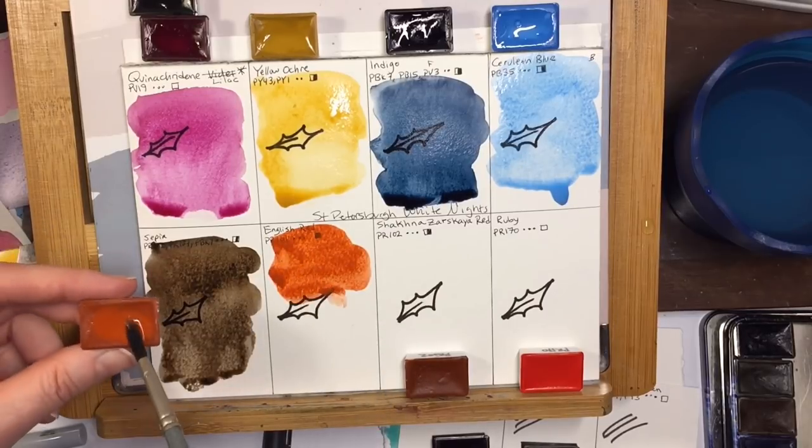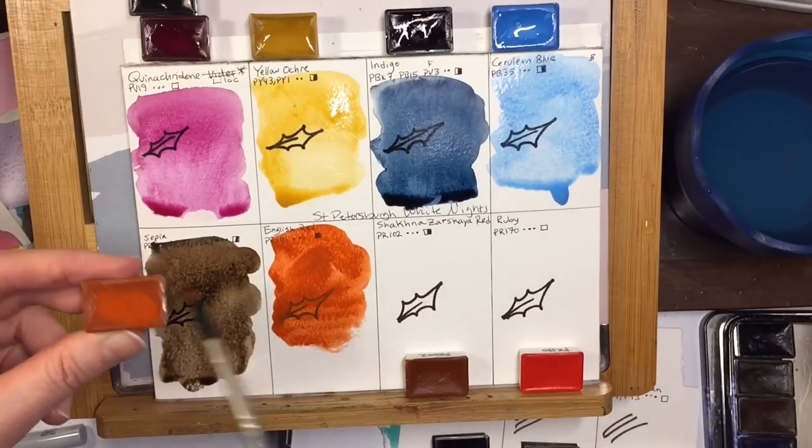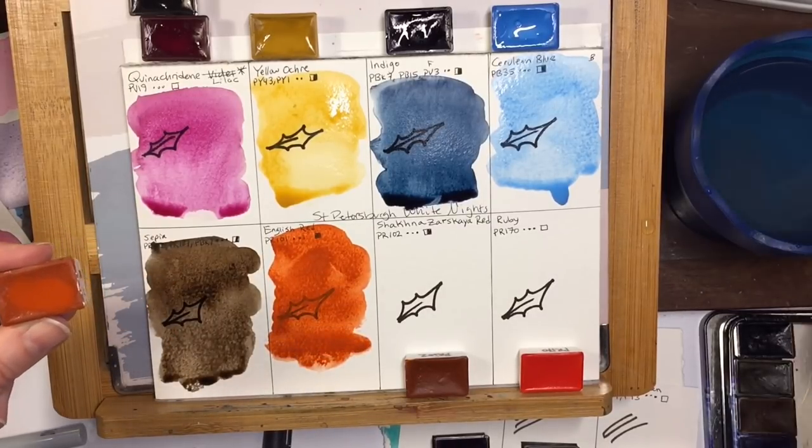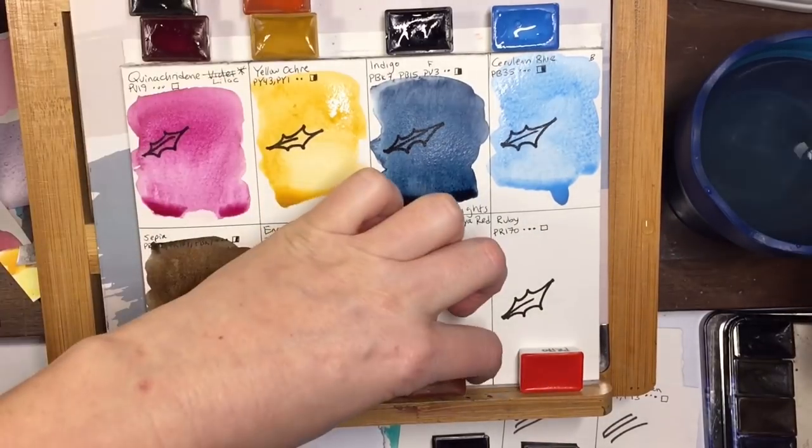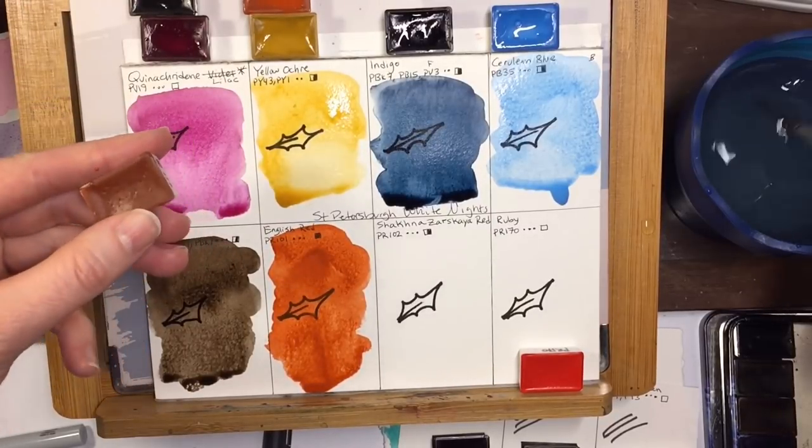So here's the English red which is a very rusty orangey red. It's beautiful. I really like playing with that because it's nice. It's very silty. It's got a nice texture to it.